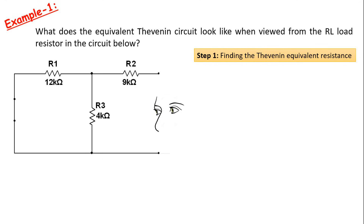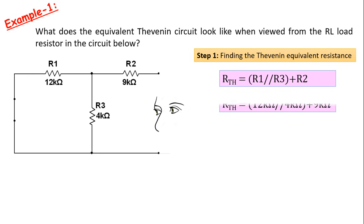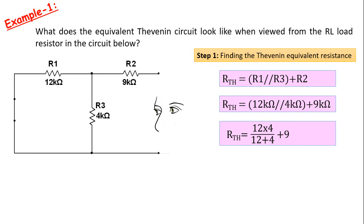Now we can find the Thevenin equivalent resistance. Here, resistors R1 and R3 are in parallel, and R2 is connected in series with them. We can write this mathematically as in this formula. 12kΩ and 4kΩ are parallel to each other and 9kΩ is in series. Since 12kΩ and 4kΩ are in parallel, the equivalent will be 3kΩ. If we add this value with the series 9kΩ, we find the Thevenin equivalent resistance as 12kΩ.